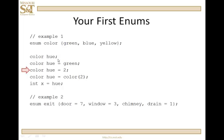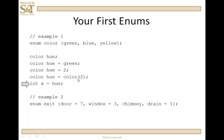If I say color hue equals 2 — remember the values are 0, 1, and 2 — is that legal? No, that's not legal because 2 is not one of the color enumerators. However, color hue = (color)2 does work. What's happening is we're casting, using old C-style casting, the integer 2 down to a type of color, which is going to be yellow. So hue will have the value of yellow. And int x equals hue? Yes, that's possible because enumerators can be promoted to integers.